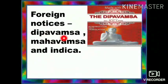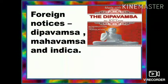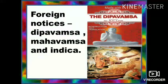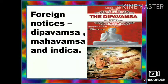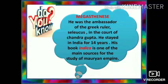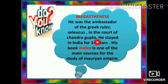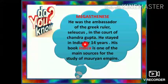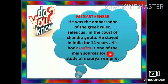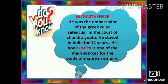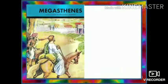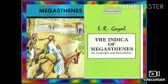Under foreign notices, we have Deepavamsa, Mahavamsa, and Indika. Indika was authored by Megasthenes. He was the ambassador of Chandragupta Maurya's court, and specifically the ambassador of the Greek ruler Seleucus, in the court of Chandragupta. He stayed in India for 14 years. His book Indika is one of the main sources for the study of Mauryan Empire. Megasthenes described about India in his book Indika.